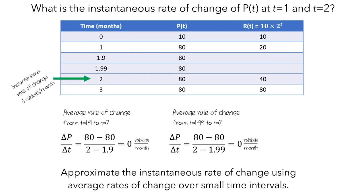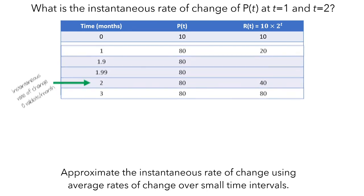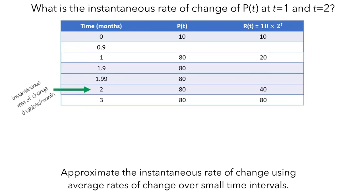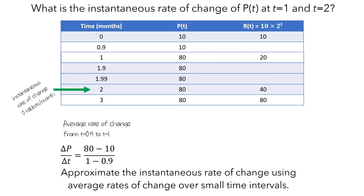This makes sense, since the rabbits only have babies at t equals 1 month, so the population isn't changing at t equals 2 months. Now, what about at t equals 1 month? Let's zoom into the interval starting at t equals 0.9 months. At this moment, the babies haven't yet been born, so there are just 10 rabbits. The average rate of change from t equals 0.9 to t equals 1 month is delta p divided by delta t, which is 80 minus 10 rabbits divided by 1 minus 0.9 months, giving a rate of 700 rabbits per month.